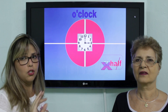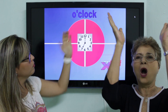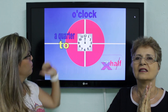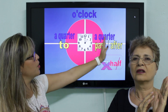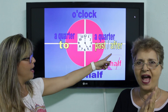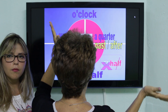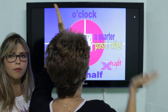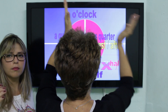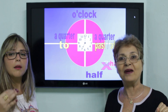Agora a gente vai praticar. Teotivana vai virar de costas e a gente vai analisar o relógio. O'clock — a quarter to, a quarter past, a quarter after, half, half past, half after. Todo mundo fazendo exercício com o teacher. De novo: o'clock, a quarter past, a quarter after, half past, half after, a quarter to. Conseguiram fazer?